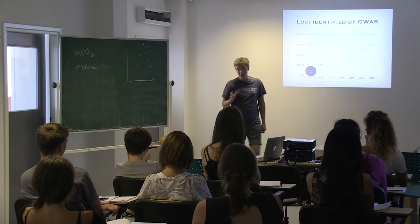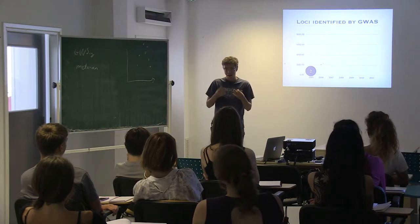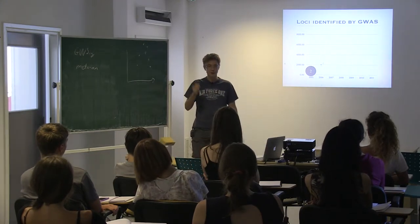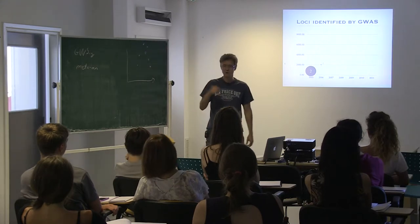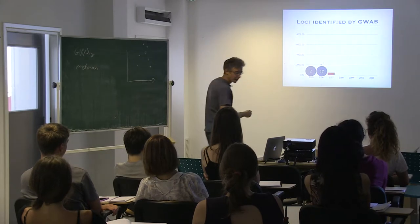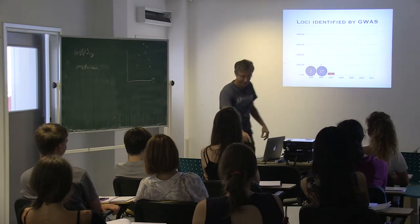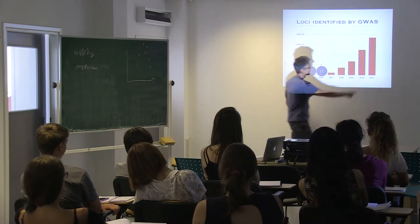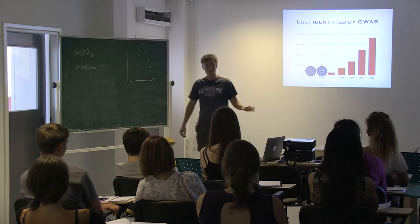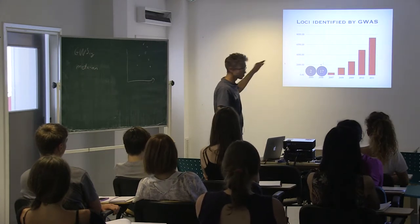There is a database that consolidates results from different GWAS. If you sort by year of publication, in 2005 two loci were identified using GWAS. That's close to zero before, so two is good enough. Then in 2006 it's 17, and then the numbers went close to a few hundred and grew exponentially. After 2011 I got bored updating this slide because the message is clear — GWAS identifies loci for complex traits very successfully.